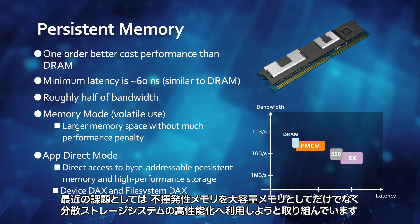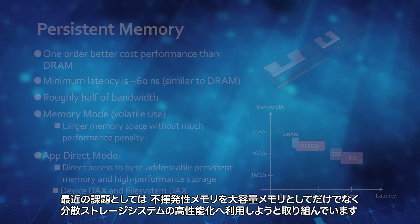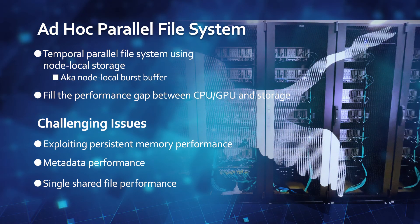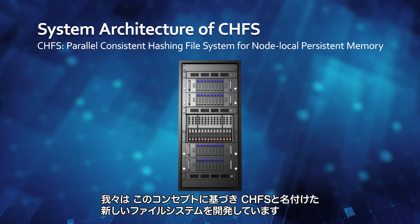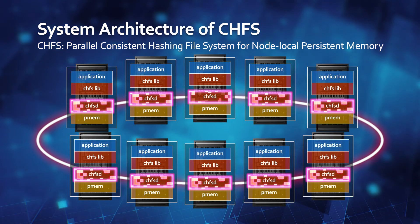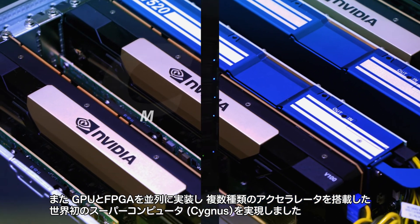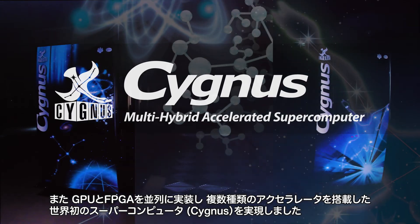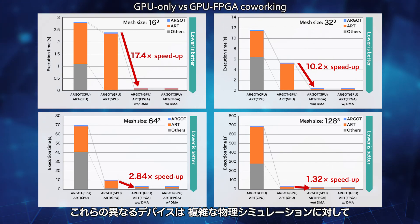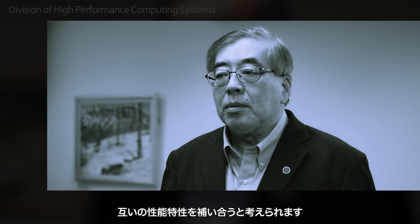One of the recent challenges focuses on the utilization of non-volatile persistent memory, not only for very large capacity memory, but also for extremely high performance of distributed storage systems. We are developing a new file system named CHFS based on this concept. We have also realized the world-first supercomputer equipped with a combination of GPU and FPGA on each computation node, named Cygnus. We think these different devices compensate each other on their performance characteristics toward complicated physical simulations.